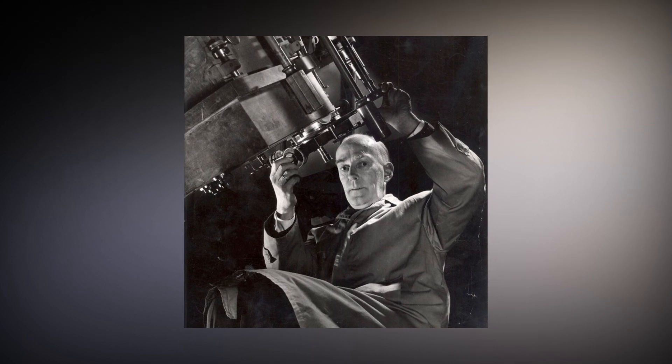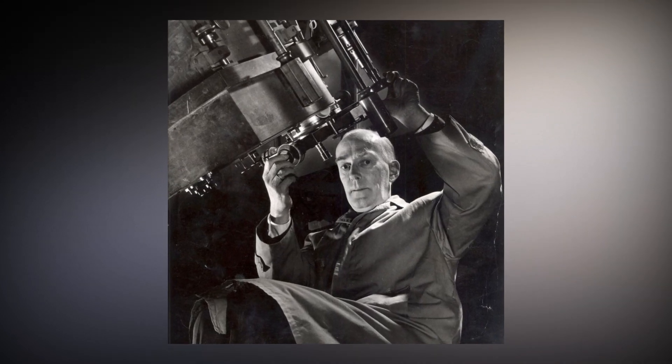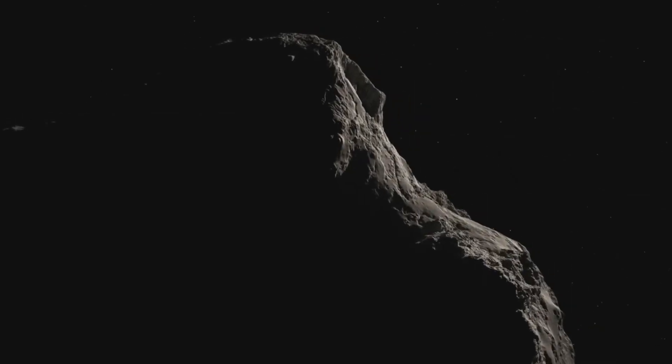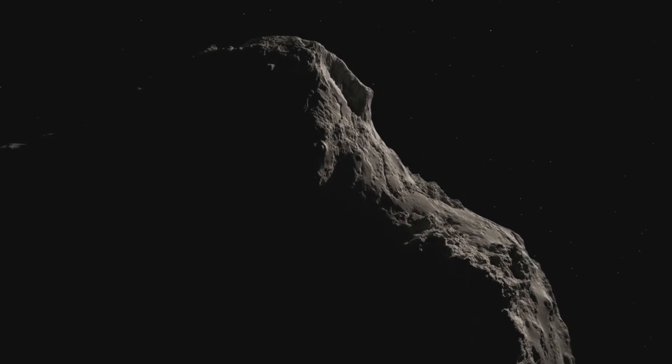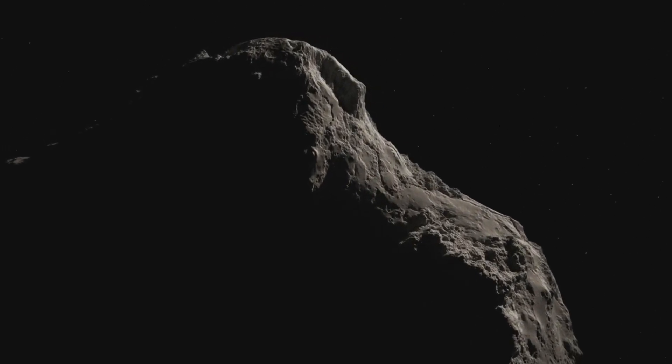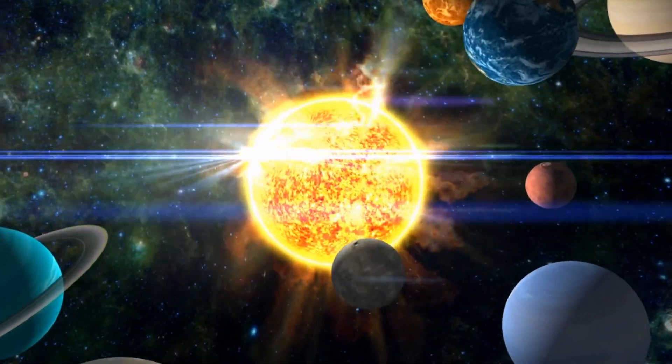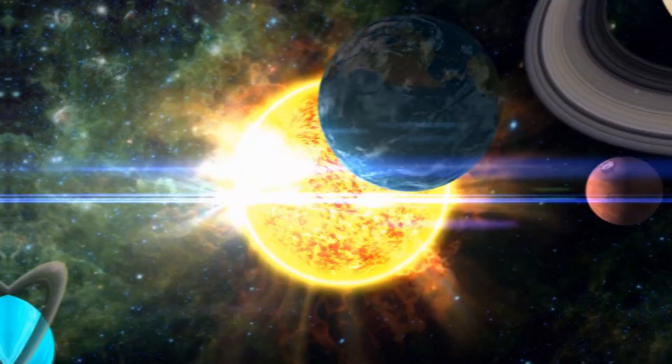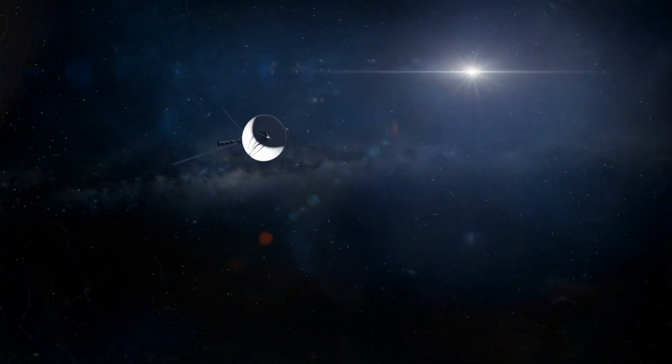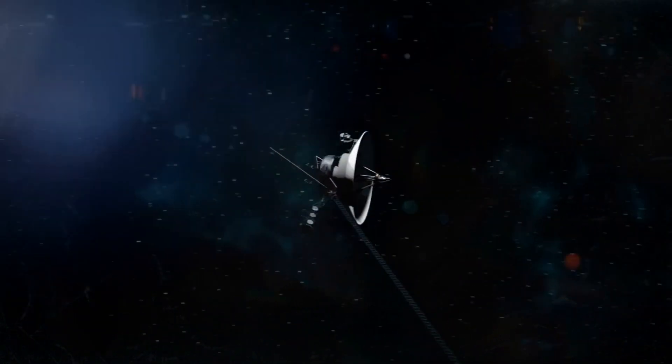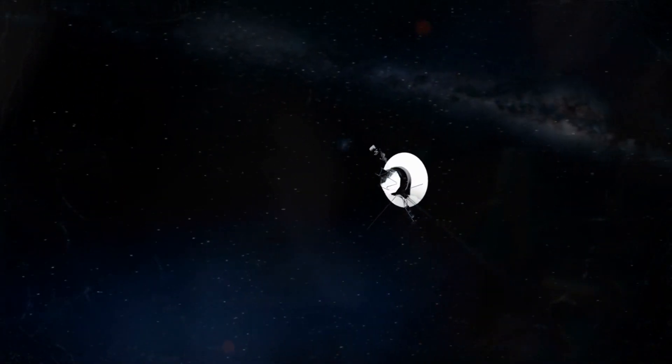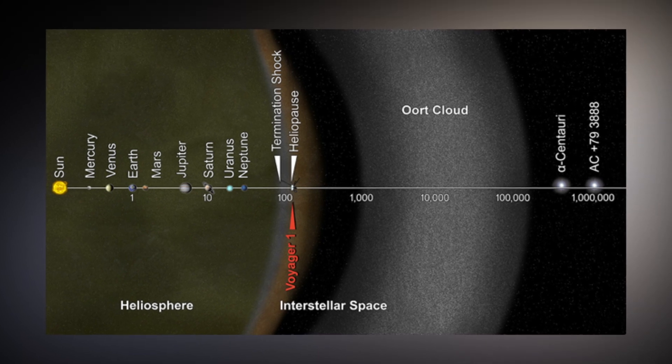The Oort Cloud, which was first postulated in 1950 by Dutch astronomer Jan Oort, remains a theory since the numerous comets that compose it are too weak and distant to be directly viewed. Ironically, this means that the greatest structure in the solar system is virtually unnoticeable. NASA's Voyager probes are not expected to reach the inner region of the Oort Cloud for another 300 years, and it might take up to 30,000 years to transit through it.